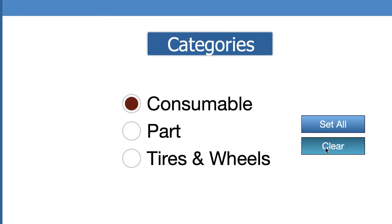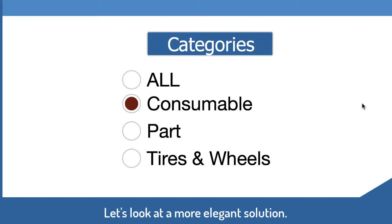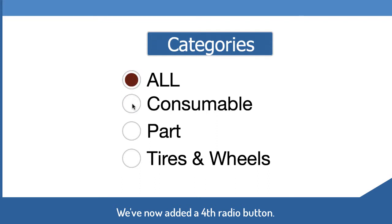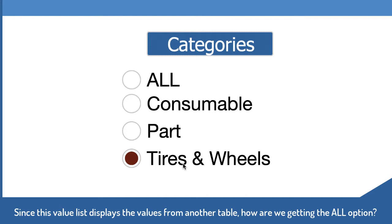But what if we want to clear all the values without an obvious button? We've changed the radio button set and added an option called 'All.' If you click on 'All,' it clears whatever other selection was made. However, this is a value list containing values from another table, and there isn't an 'All' option in that table — so how do we do this?